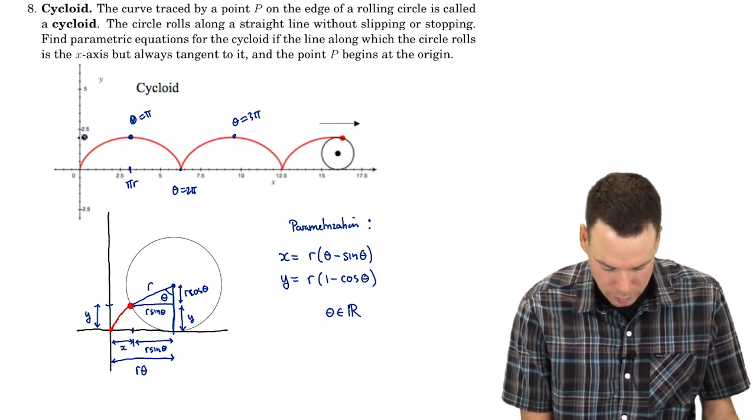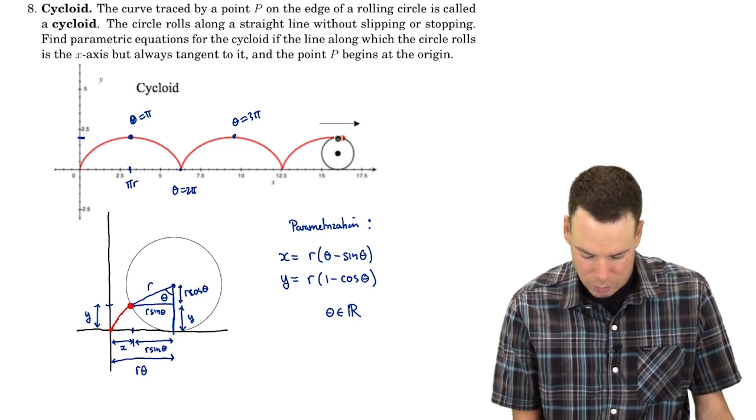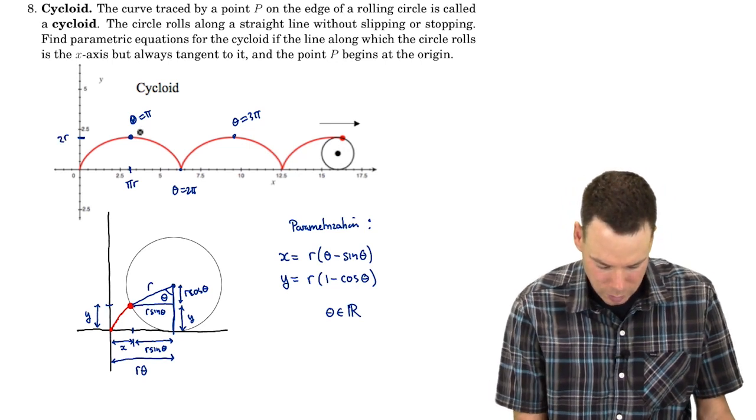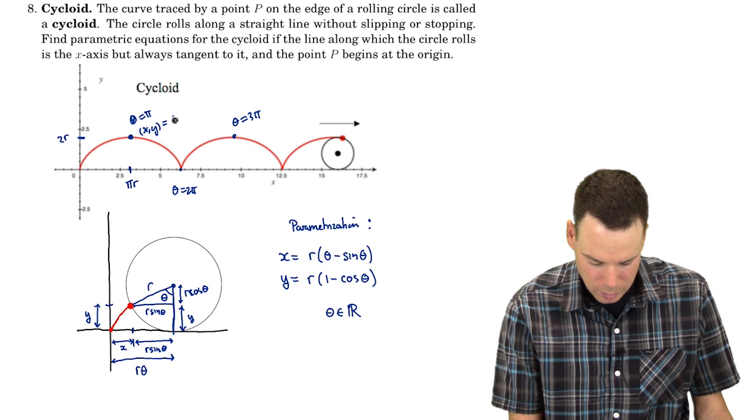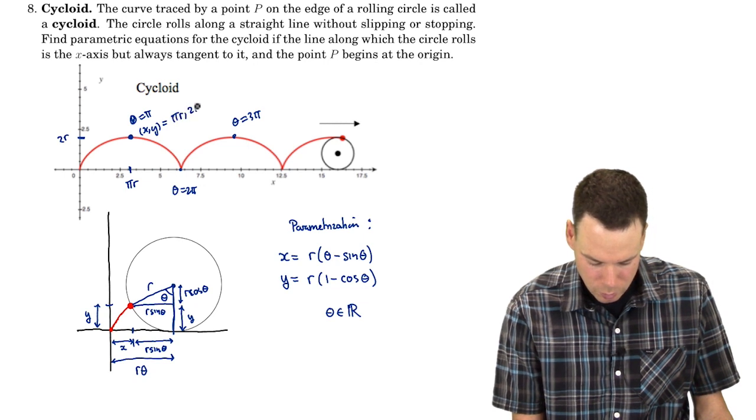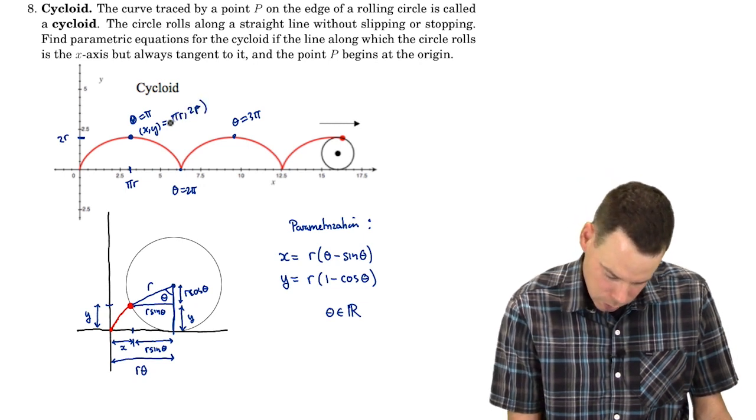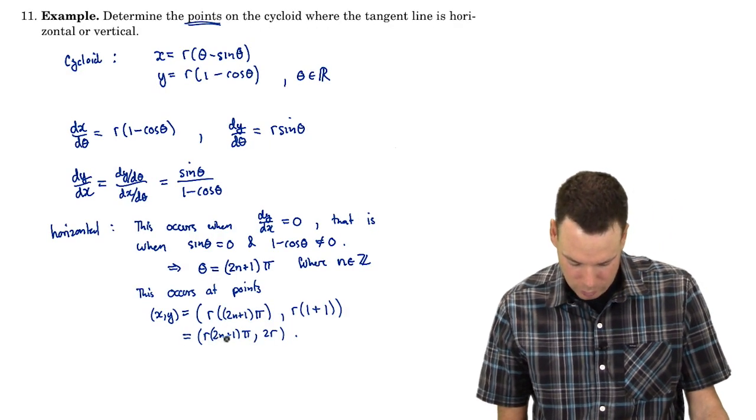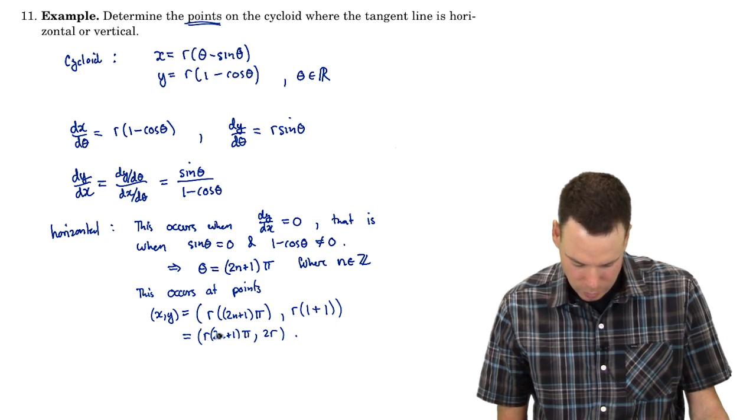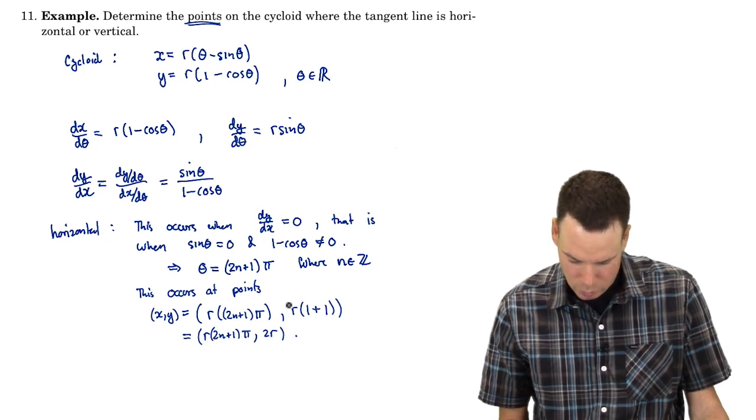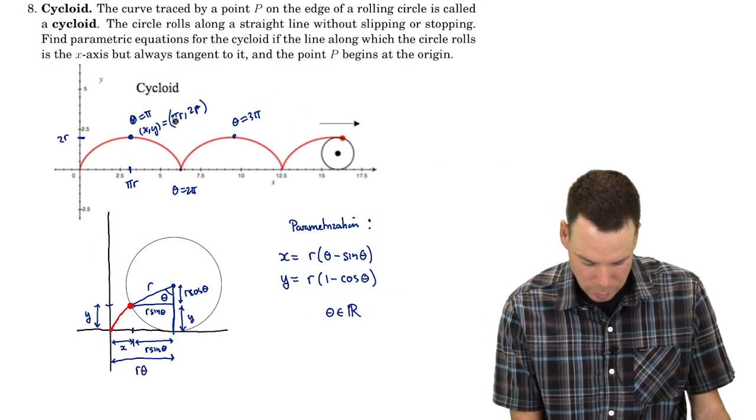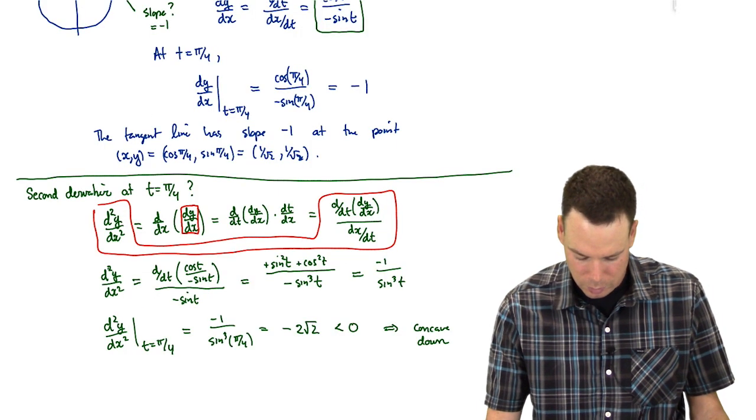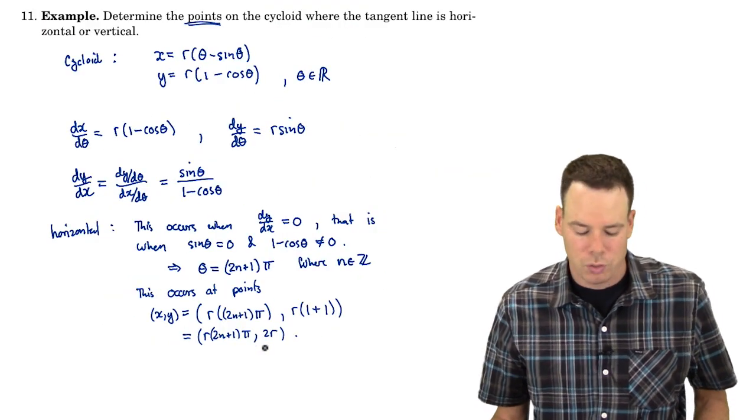And the corresponding y coordinate, well it's reaching up as high as it can go, that's twice its radius. So its y coordinate would be 2r. So the xy coordinates of this point would be pi r and 2r. And so let's look back. Is that what we got? So we're looking at the case when n is 0, that first instance. So this would be r pi and 2r. That's what we got. And then it just repeats as you go along there. So there's our general formula for where the tangent lines are horizontal.